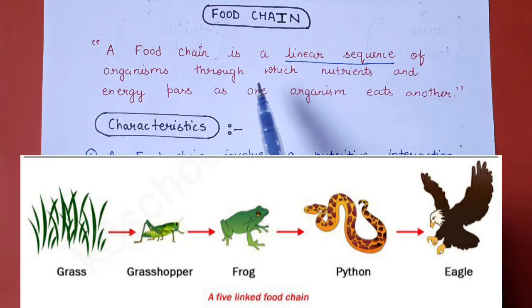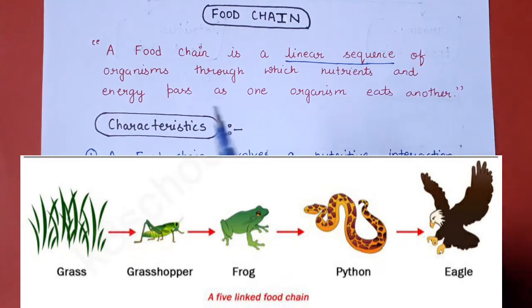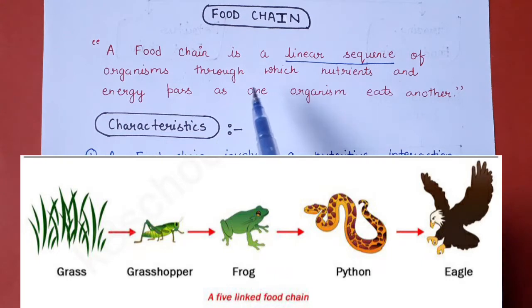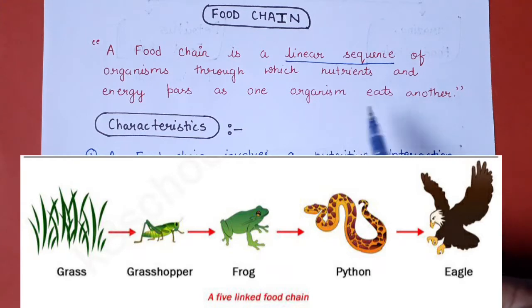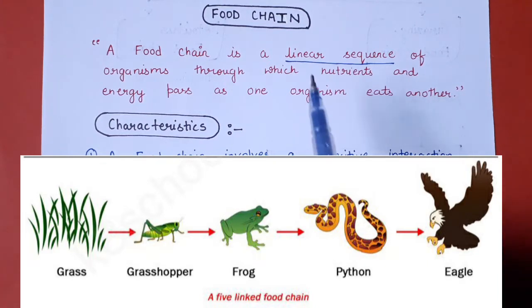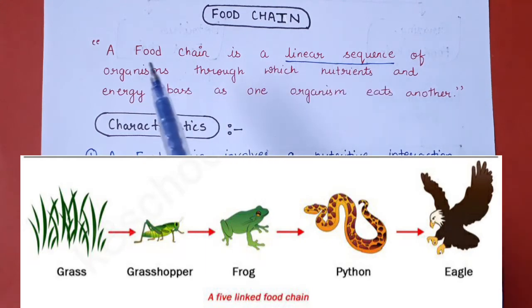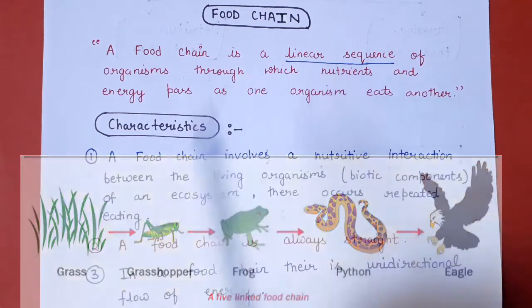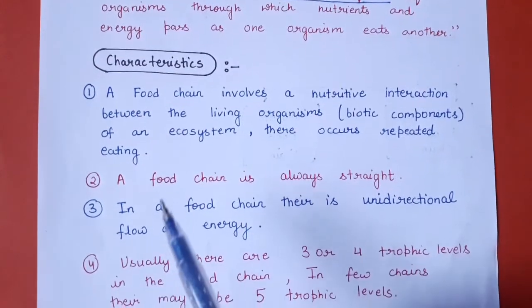A food chain is a linear sequence of organisms through which nutrients and energy pass as one organism eats another. Food chain ek linear sequence hai organisms ka, jiske through nutrients aur energy ka transfer hota hai. Jaise hi ek organism doosre organism ko eat karta hai, nutrients aur energy ka transfer hota hai doosre organism mein, is tarike se ek linear sequence mein ye chalta rehta hai.